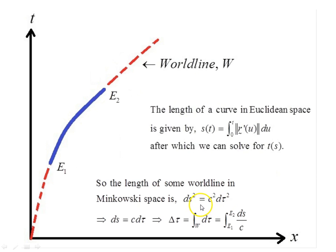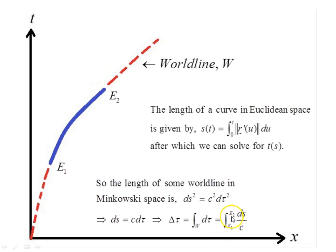There is a parallel in special relativity in four-dimensional Minkowski space. The element of length ds satisfies ds² = c²dτ², so an interval of proper time is the integral of dτ along the world line, which equals the integral of ds between event 1 and event 2 — the arc length in four-space. Just as in Euclidean vector analysis time is a function of arc length, here proper time is a function of the arc length in Minkowski space.